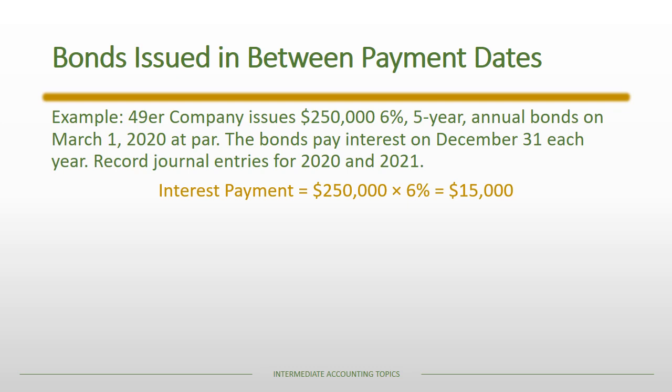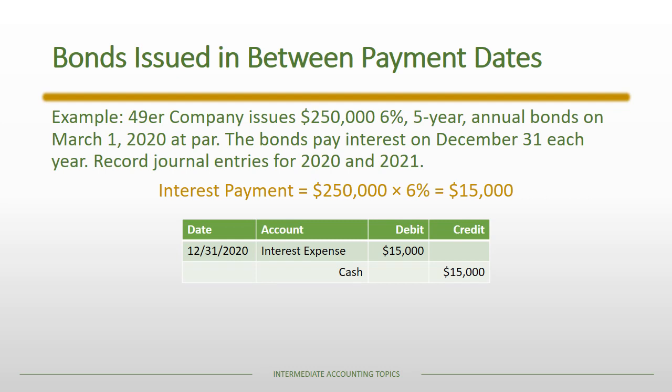Now we have our first interest payment on December 31st, and that interest payment is going to be in the amount of $15,000. When we issue a bond at par — if you remember the previous lecture — the interest expense is derived from the cash payment and the cash payment only. So this interest payment of $15,000 gives us an inferred interest expense of $15,000.